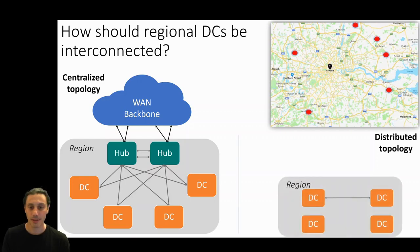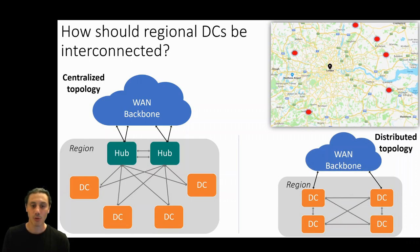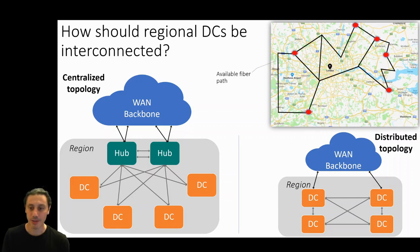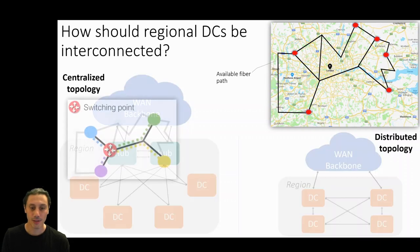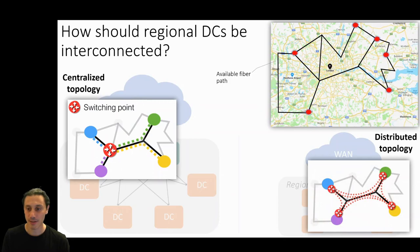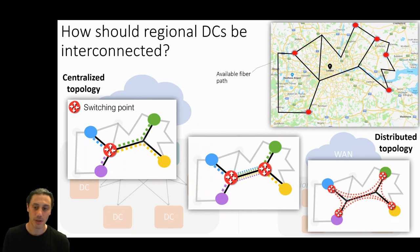In the other extreme, a distributed approach removes the need for hubs and directly connects data centers to each other. This approach builds all pairs of data center to data center connections, and compared to the centralized approach that requires N connections, it needs N square links for N data centers. Such logical topologies would need to be implemented atop the existing fiber maps in the regions, with a picture showing how the logical designs of centralized and distributed topologies might be instantiated in the real physical topology. Of course, any approach in between these two extremes is also feasible. Semi-distributed topologies can cluster and connect data centers under local hubs. Hubs can then be interconnected to provide a full regional data center interconnect.